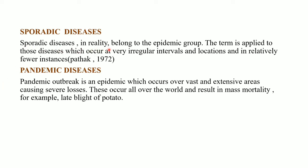Sporadic diseases belong to the epidemic group. The term sporadic disease is applied to those diseases which occur at irregular intervals and locations and in relatively fewer instances. Pandemic diseases represent an outbreak which is an epidemic occurring over a vast and extensive area, causing severe losses all over the world and resulting in mass mortality. For example, late blight of potato is a pandemic disease, and recently the coronavirus is also a pandemic.